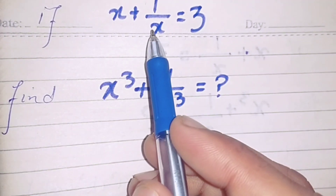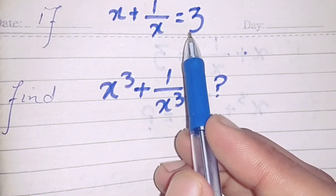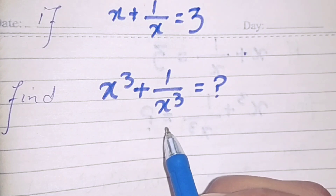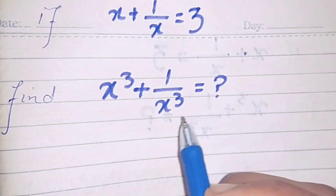We have a question: if x plus 1 by x is equal to 3, find x cubed plus 1 by x cubed.